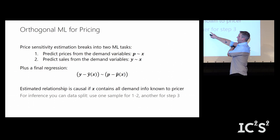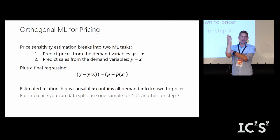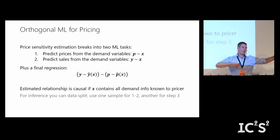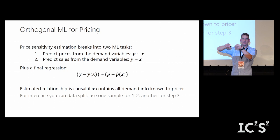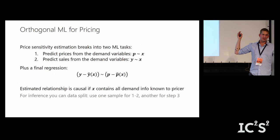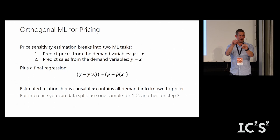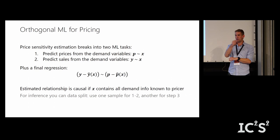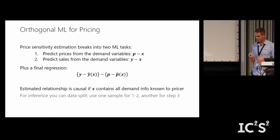Data splitting, as mentioned yesterday, is a really good idea used heavily in industry but not enough in academia. You estimate the two nuisance functions on one dataset, then use a separate dataset to estimate the final regression of residuals on residuals. Academics might worry about statistical power, but if you do it twice — switching which sample is auxiliary — and average the results, your efficiency is on the same order. So use data splitting more often.